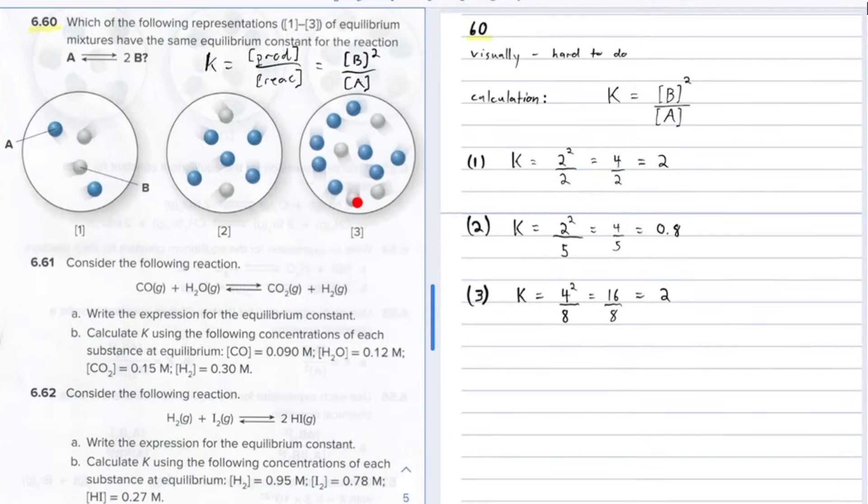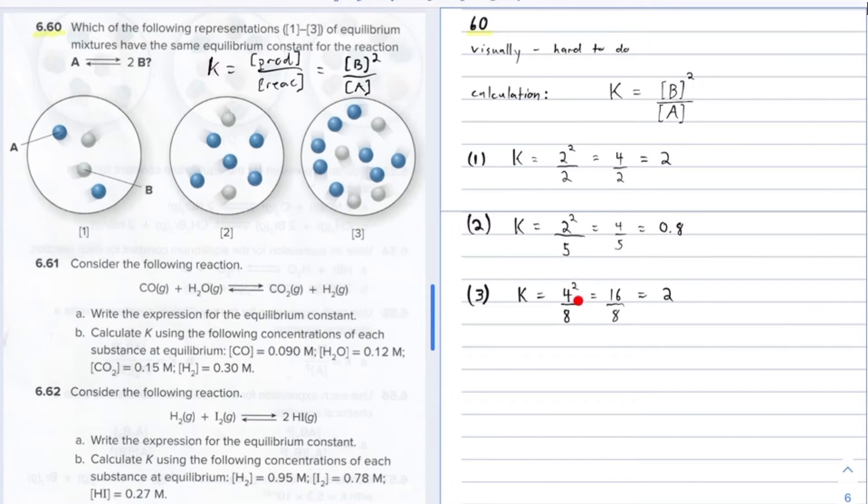And then for reaction mixture three, you got four product B's and then eight reactant A's. So you got four squared over eight, which comes out to 16 over eight, which is two. So you can see that it's going to be number one and number three, which are the same.